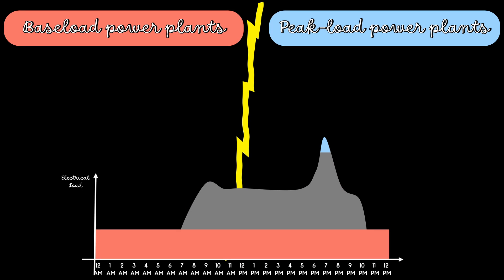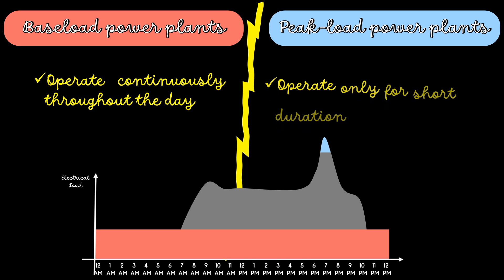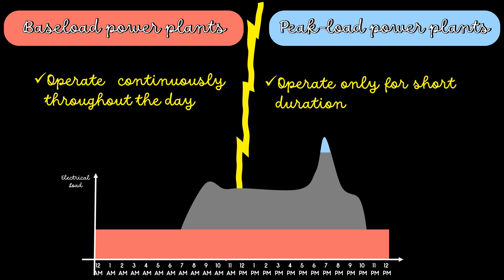Base load power plants should operate continuously throughout the day. They run all season except when repairs or scheduled maintenance occur. Peaking demands are often only for shorter durations; therefore, peak load power plants run only for a short duration.